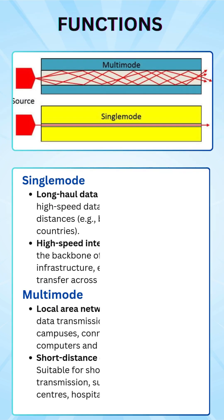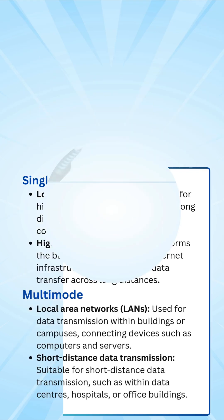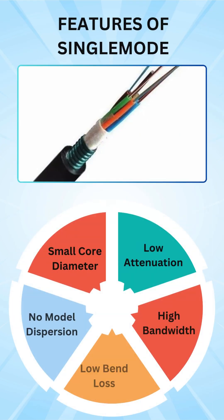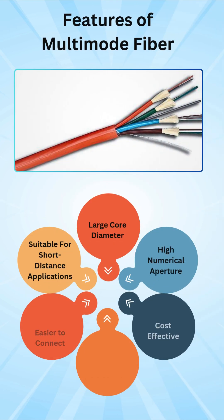Functions of single mode and multimode. Features of single mode: small core diameter, low attenuation, high bandwidth, low bend loss, no modal dispersion. Features of multimode fiber: large core diameter.